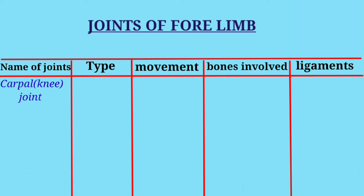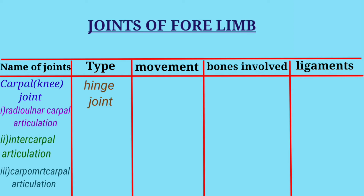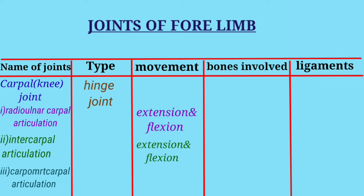Third is the carpal joint. Three types of articulation are present: first is radio-ulnar carpal articulation, second is intercarpal articulation, and third is carpometacarpal articulation. All three are hinge joints. Movement in radio-ulnar carpal articulation is extension and flexion; in intercarpal articulation it is also extension and flexion; and in carpometacarpal articulation there is slight gliding movement.